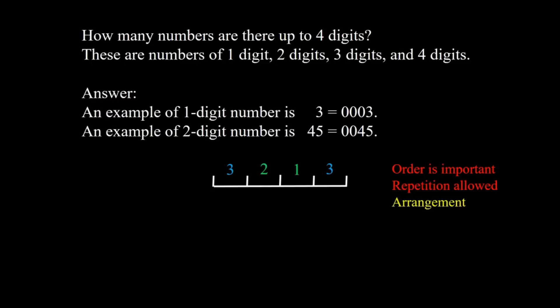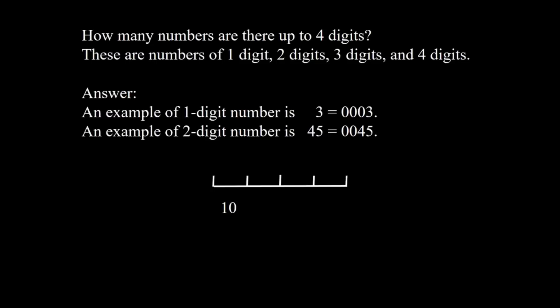We have 4 places and 10 digits, namely 0 through 9. For each of the four places, there are 10 possible digits. We multiply them and get 10 to the power 4.